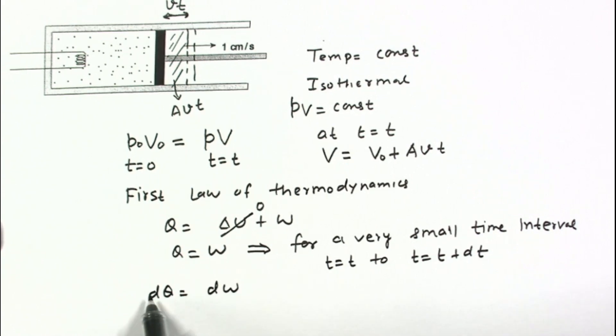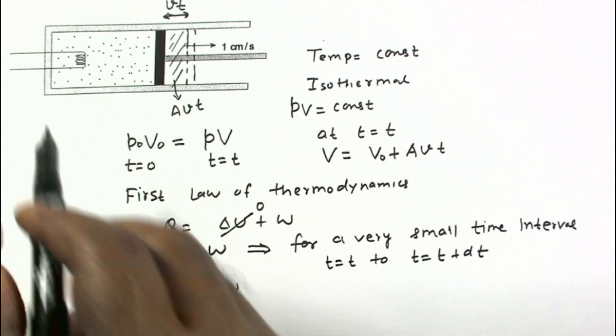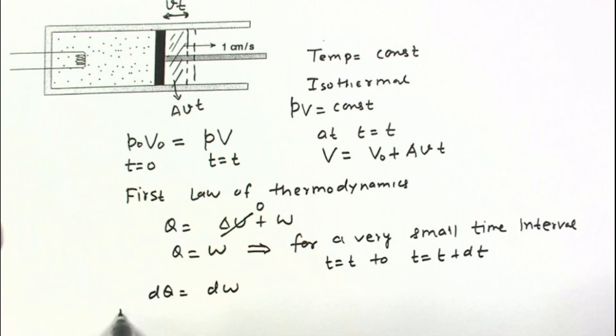And this dQ can be written as power of this heating element P multiplied by time interval dT. So in a very small time interval, power can be assumed to be constant, and that is multiplied by time interval. It is heat given by this filament.